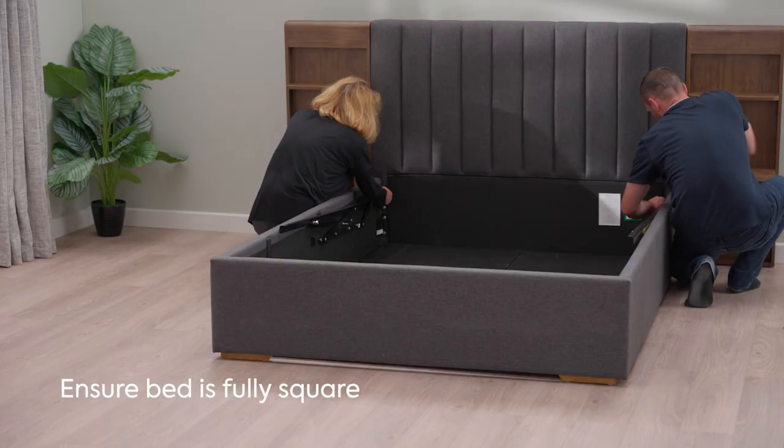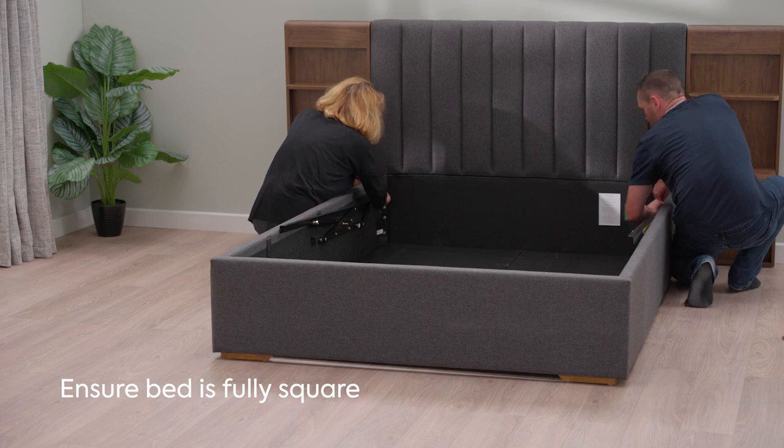Once side rails and brackets are in place, ensure the bed is square and then all bolts can be tightened to 100%.